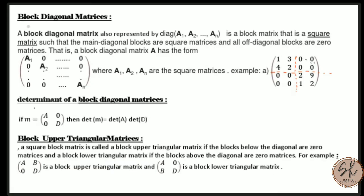The next topic is the block diagonal matrix. A block diagonal matrix, also represented as Diag(A1, A2, ..., An), is a block matrix that is square, where the main diagonal blocks are square matrices and all off-diagonal blocks are zero. A1, A2, ..., An are non-zero square matrices, and the rest are null matrices.